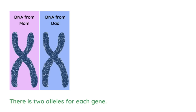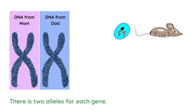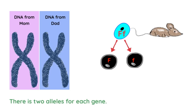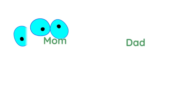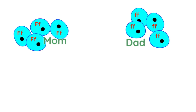Quick reminder: there are two alleles for each gene. Now imagine the mother mouse has one brown allele and one white fur allele. When it produces its reproductive cells, those cells will only have one allele each for that gene. The mother's body cells all have capital F and lowercase f. The father's cells all have lowercase f, lowercase f — we know that because the father has white fur, and white fur is recessive.